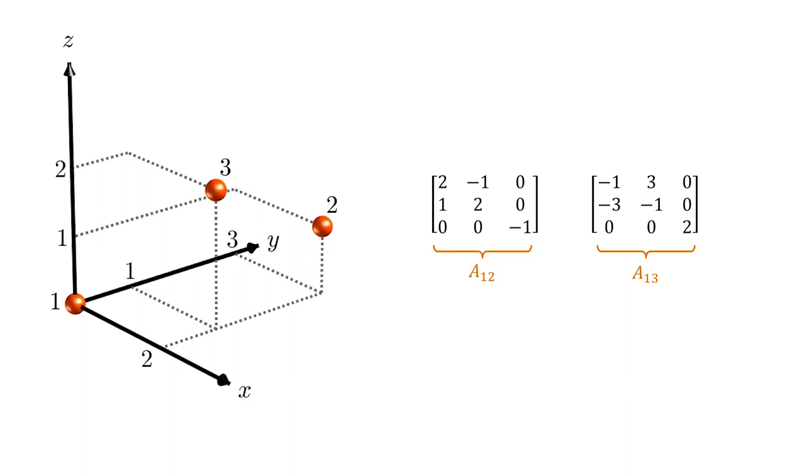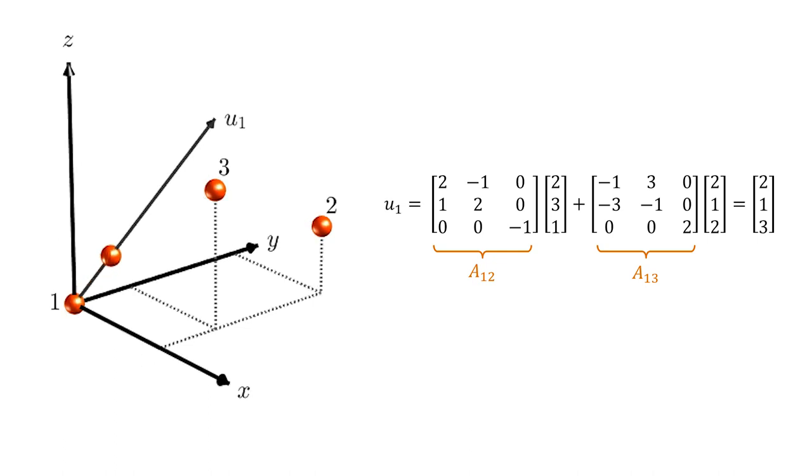In our approach, a set of constant gain matrices computed by solving a semi-definite program is provided to each agent before the mission. The local relative positions of neighboring agents are multiplied by the associated gain matrices and summed to determine a desired direction of motion.